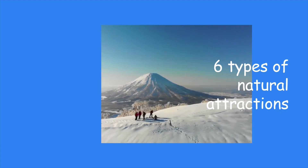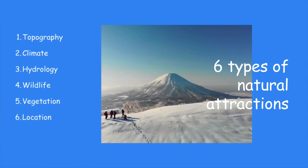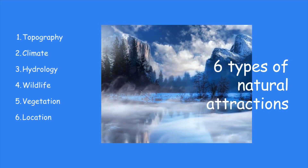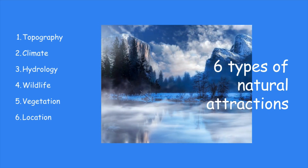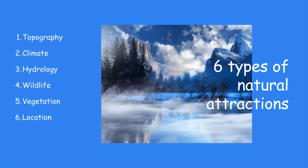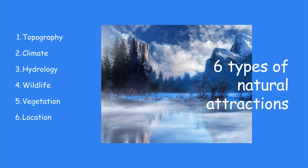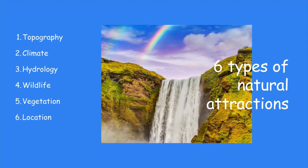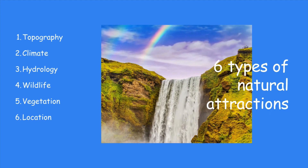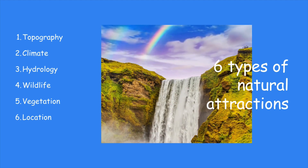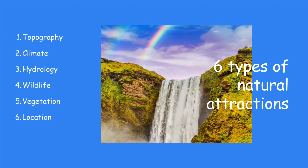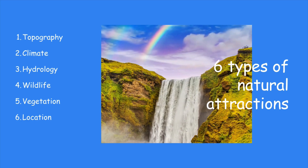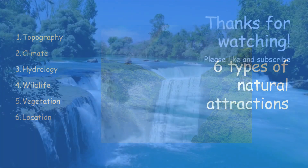In a world increasingly dominated by concrete jungles, the allure of natural tourist attractions has never been more potent. These attractions — ranging from towering mountains to serene beaches, from sprawling forests to mesmerizing deserts — offer an escape from the monotony of urban life and a chance to reconnect with nature. Knowing these six types of natural tourist attractions is not just about planning and selling tourism products; it's about appreciating the diversity and beauty of our planet. Each type of attraction offers a unique experience and a glimpse into the intricate and awe-inspiring systems that govern life on Earth.